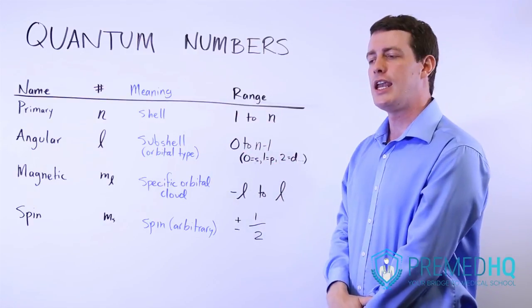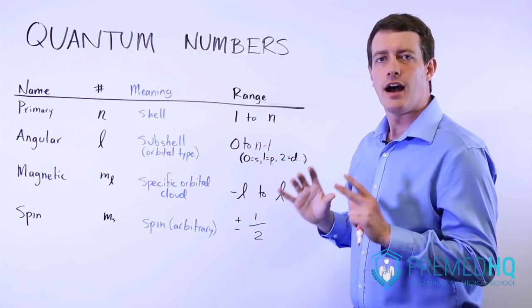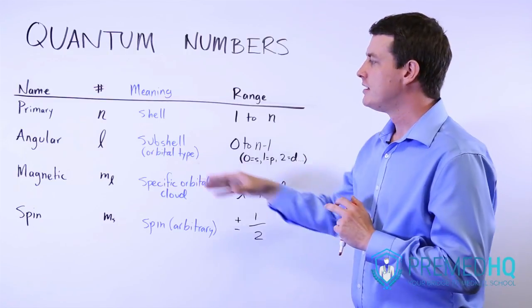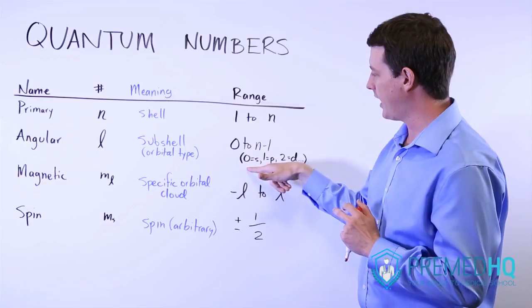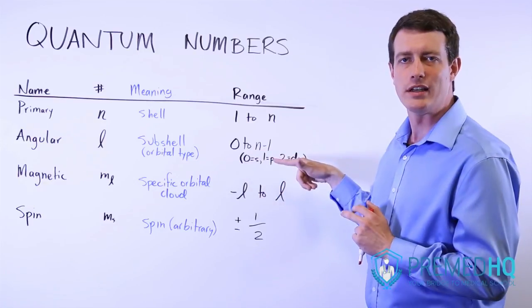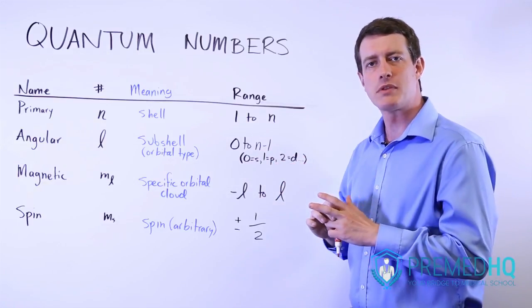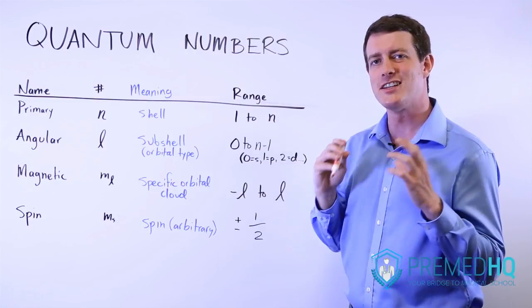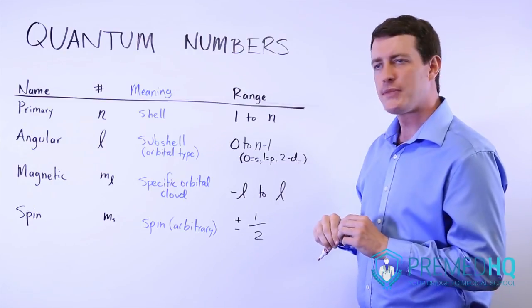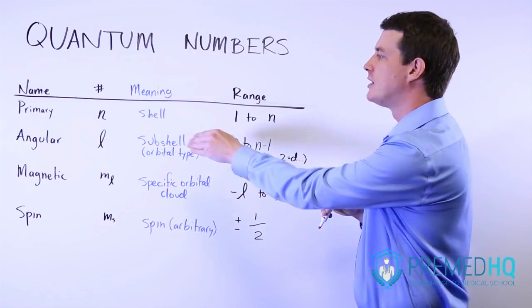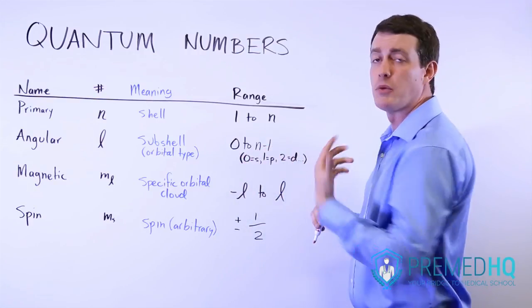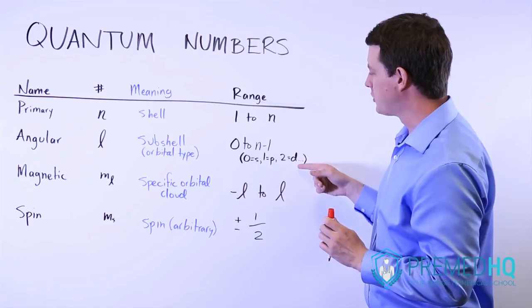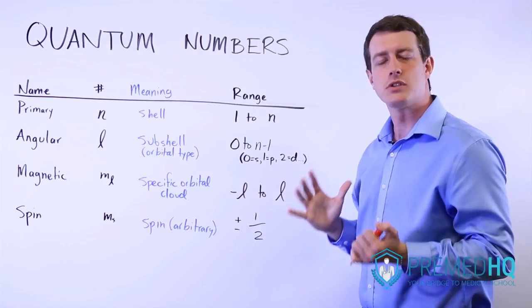And within any particular atom, an electron can have an angular quantum number of anywhere from 0, meaning s, to n minus 1. So once again, if we're dealing with something where the highest energy electron is in the 3d orbital, the maximum l number it can have is going to be 3 minus 1, which is 2. And it just so turns out that 2 is equal to the d orbital.